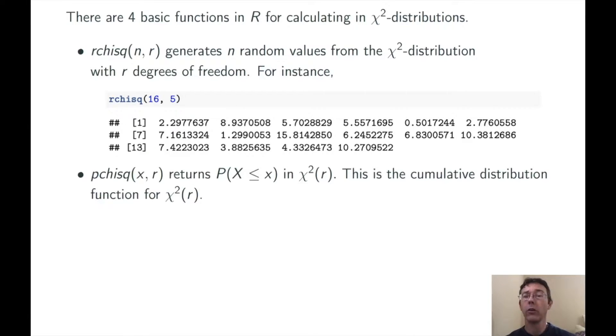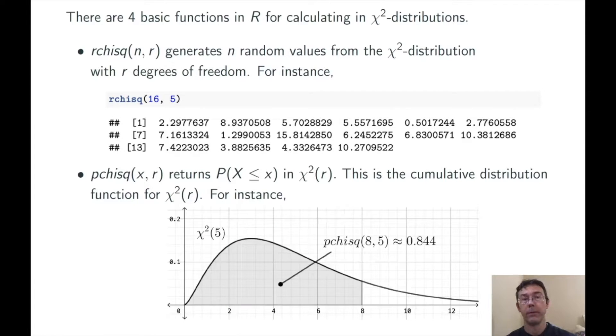pchisq is the cumulative distribution function for the chi-squared distribution with R degrees of freedom. It returns the probability of randomly getting a value in that distribution less than or equal to the x value that you input.